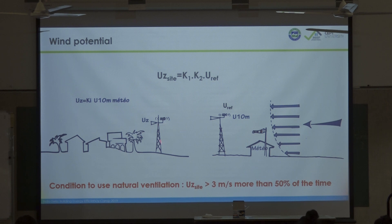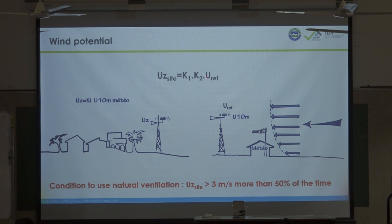The issue is that you need a mast and to record data at a height of 10 meters. If you cannot afford a weather station or don't have time to install one, you can use correction coefficients k1 and k2, which depend on the roughness and topography of the site. You then check the condition for natural ventilation: the mean air velocity must be above 3 meters per second more than 50 percent of the time.